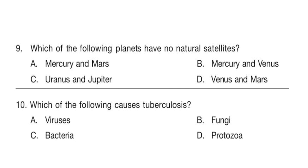Question 9. Which of the following planets have no natural satellites? The answer is Mercury and Venus. Question 10. Which of the following causes tuberculosis? The answer is option C: Bacteria.